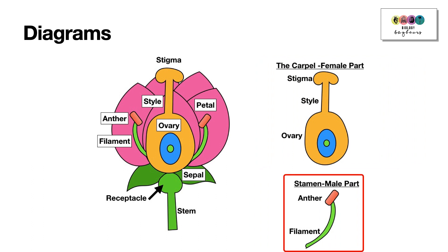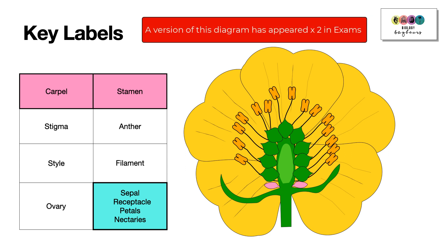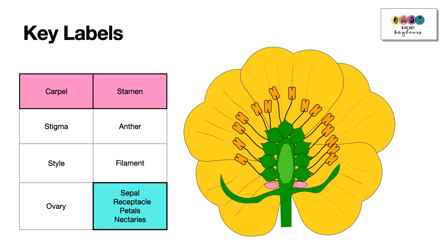Often we get comfortable with one diagram in particular, and it's so important to do exam papers because when you do exam papers you get exposed to alternative diagrams. One version of the flower that often comes up is this diagram, however it's usually not coloured. This particular diagram has appeared at least twice at ordinary level in the exams, so even if you get a different diagram you should be able to identify the key parts of the flower.